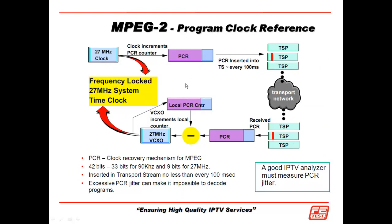We also want to introduce the program clock reference, which is the method of sending a synchronization signal to the distant end so that it stays phase-locked with the transmitter. The transmitter puts a program clock reference, or PCR, into that transport stream every 100 milliseconds. It goes across the network, is received at the far end — say the set-top box — which looks for that PCR, takes that timestamp value, and compares it with its own to stay phase-locked.